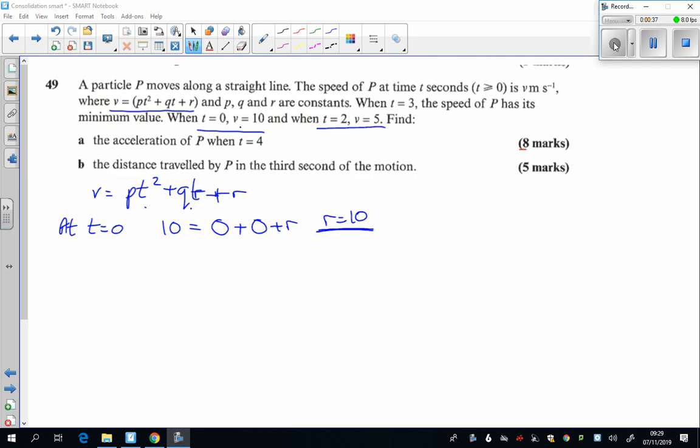Well let's now put the next piece of information in. At t is equal to 2, the velocity is 5. So I've got 5 equals 4P plus 2Q, and R of course was 10. Now we can't yet find out what P and Q are, but we can rewrite this, taking the 10 from both sides. That's going to be the first part of a simultaneous equation we're going to set up.